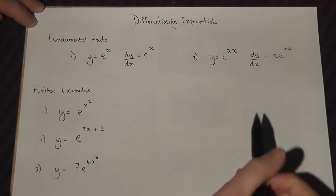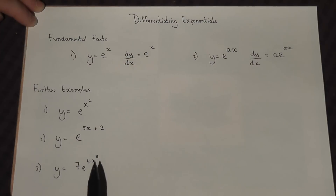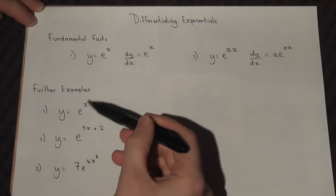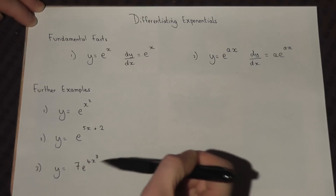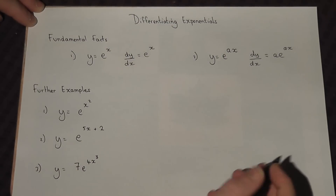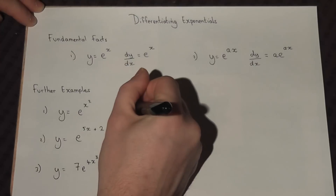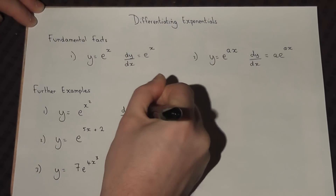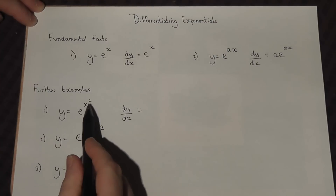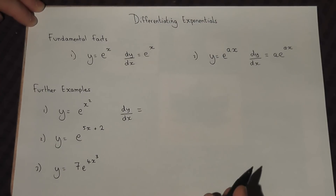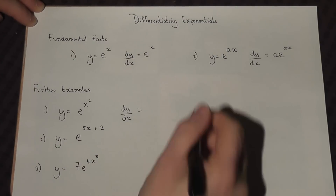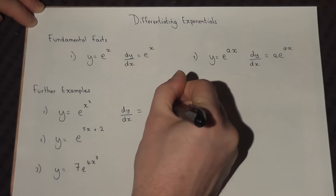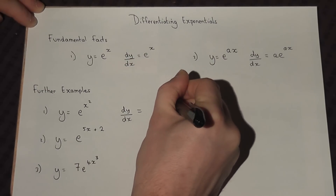Now there are three further examples that utilize this principle, but with harder powers. These examples rely on the fact that if we differentiate the exponential function it stays the same. So e to the power of x squared stays as e to the power of x squared.